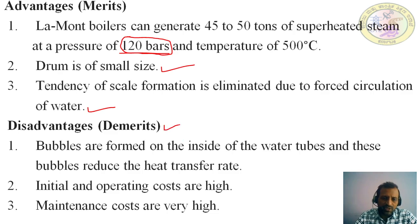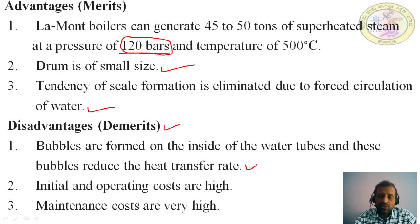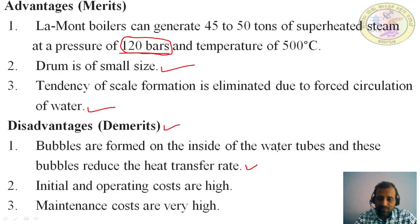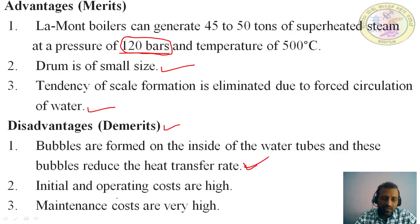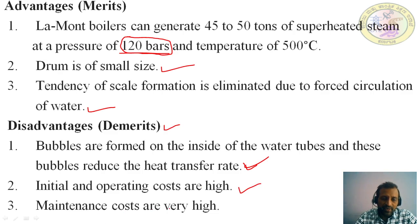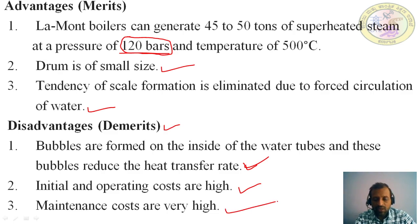The disadvantages of the Lamont boiler are: bubbles form on the inside of the water tubes, and these bubbles reduce the heat transfer rate. Since there is no drum, water starts boiling directly in the pipe, and this bubble formation reduces heat transfer in the pipes. Additionally, the initial and operating costs are very high, and maintenance costs are also very high. These are the disadvantages of the Lamont boiler.